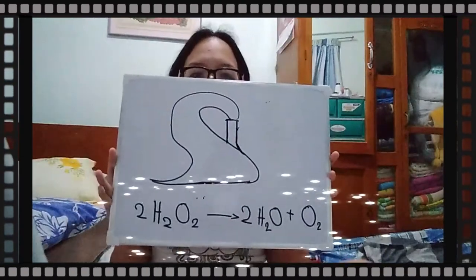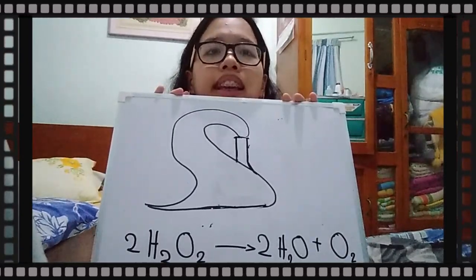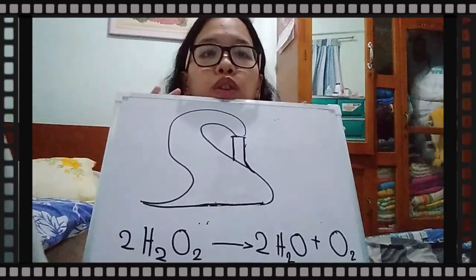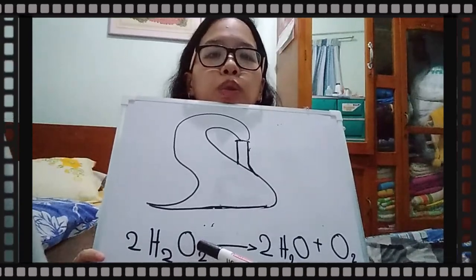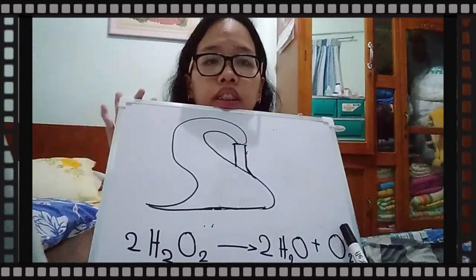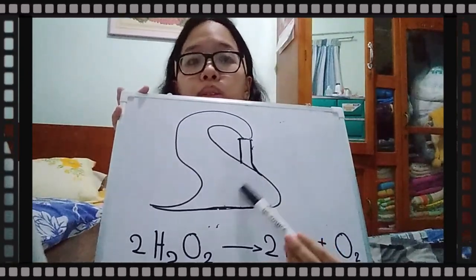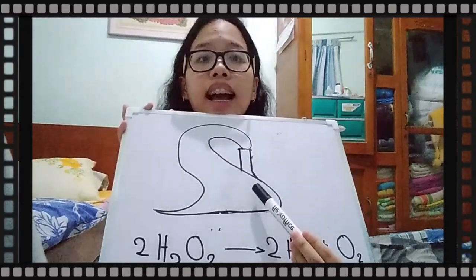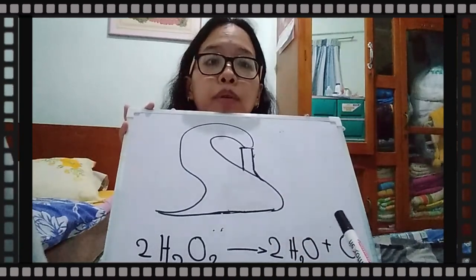But why do we need dish soap and yeast to create the elephant toothpaste? This is the chemical equation: 2H₂O₂, when it breaks down in water, would become water and oxygen. As oxygen releases, the bubbles form and create this foam. But to help create elephant toothpaste, we need to add yeast, as it is a catalyst which helps hydrogen peroxide to break down more in water and produce more oxygen.